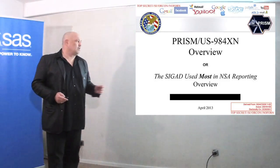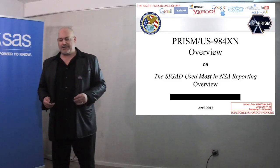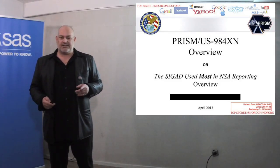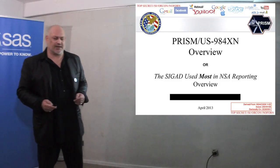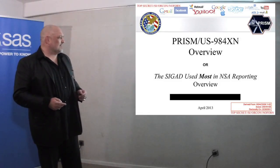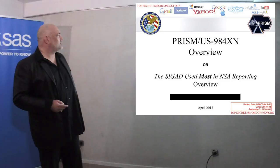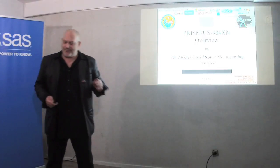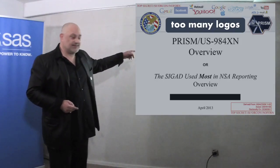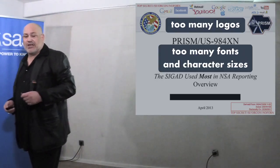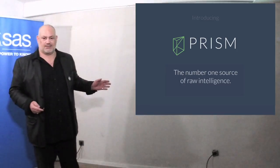Thanks to Edward Snowden, Julian Assange and WikiLeaks, we have these real slides from the NSA about the PRISM project. And as you can see, obviously somebody at NSA was very proud of how well he could download some logos from the internet. This is too many logos for the first chart of this presentation — too many logos, too many fonts, too many character sizes. Just cut it down, because this chart could look much nicer.